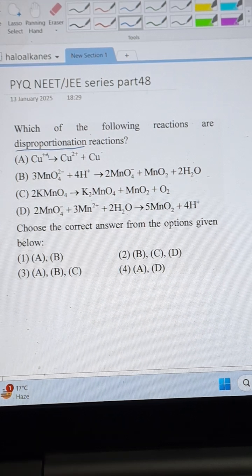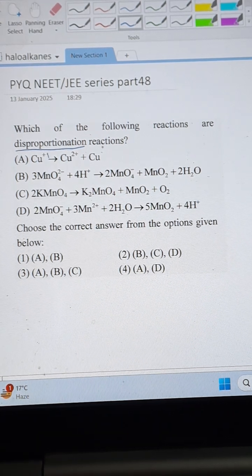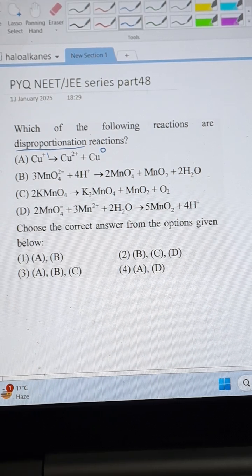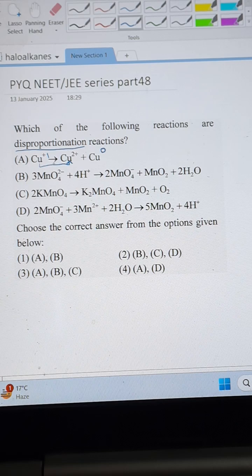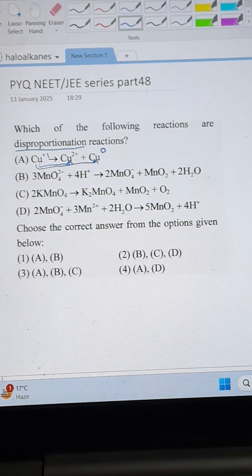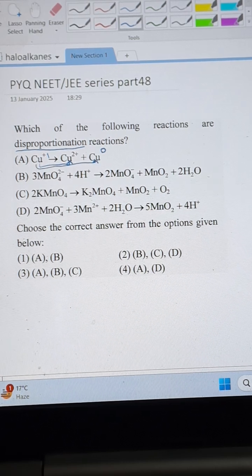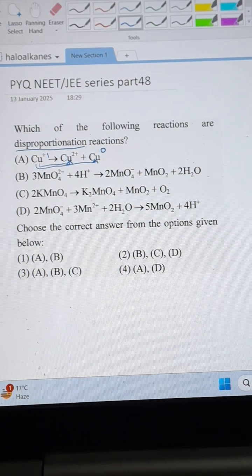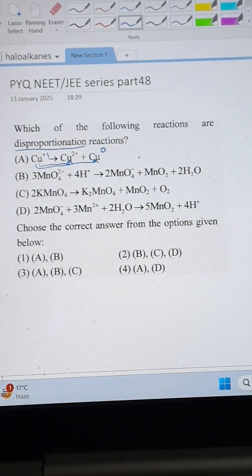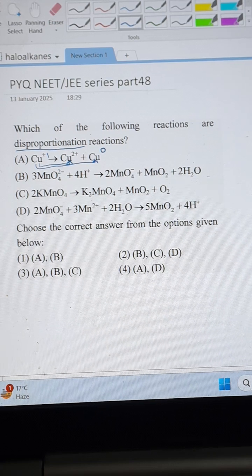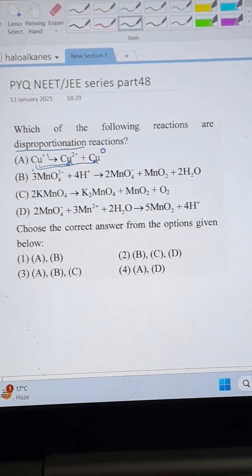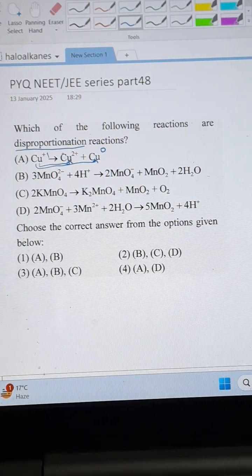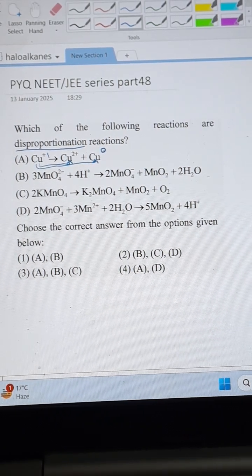And I am taking the example of first reaction because it is disproportionation reaction. In this copper plus one is undergoing two changes. In the first one the charge is increasing to plus two and second one charge is decreasing to zero. So this is disproportionation reaction because in first step it is oxidizing and the second step it is reducing. So oxidation and reduction takes place with the same element. Okay, this is disproportionation reaction.